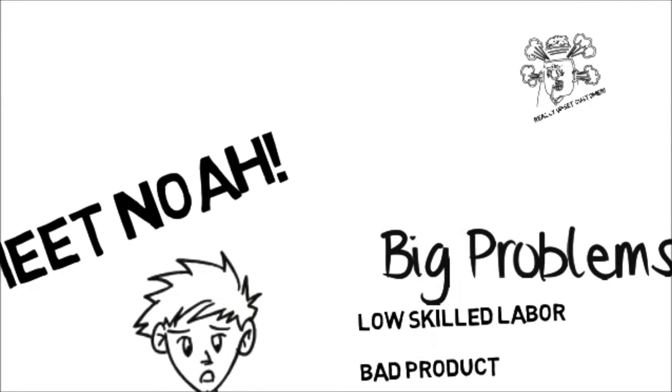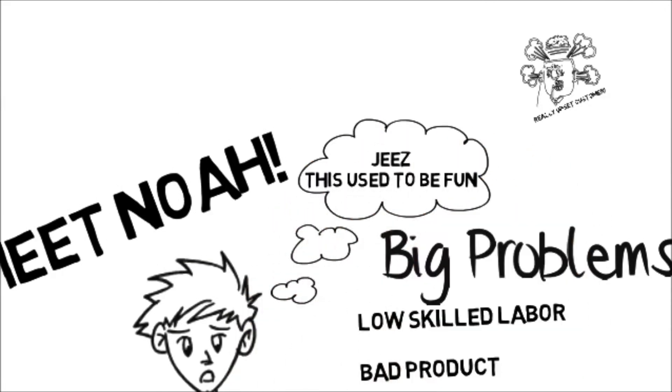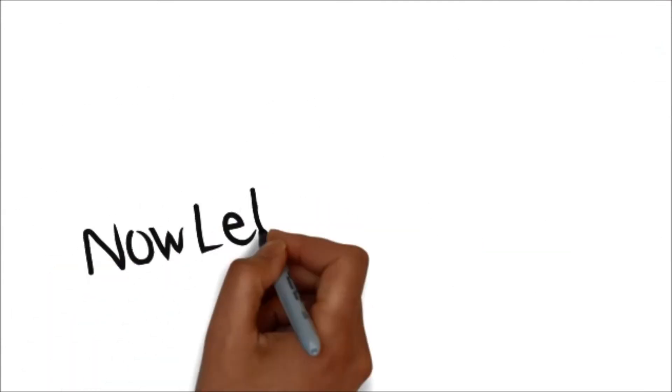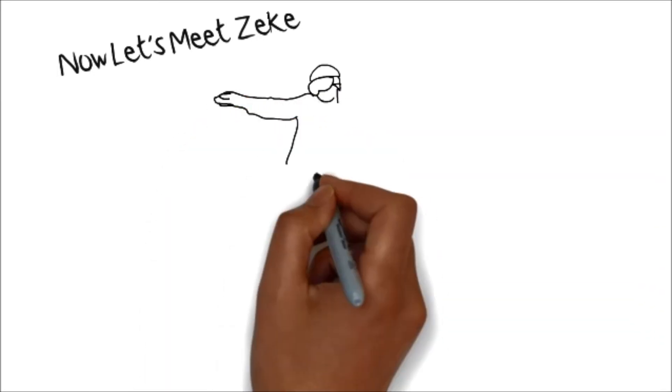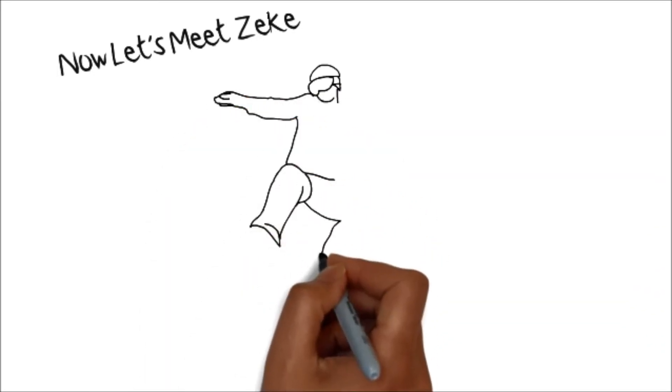Noah's a good guy who makes great doors, but is being crushed by one problem after another. Now, meet Zeke, Noah's longtime pal. They both make doors, really great doors. Noah calls Zeke to talk about his problems.